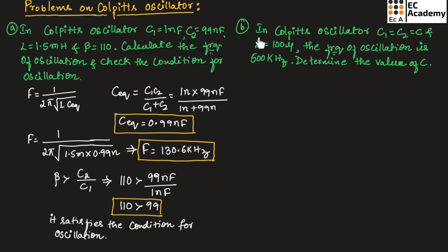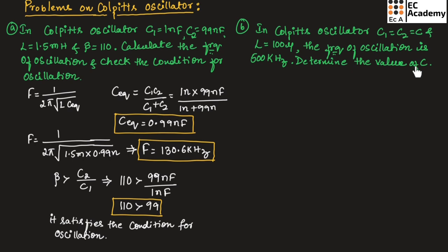Now let us consider the second problem. In Colpitt's oscillator, C1 = C2 = C and L = 100 microhenry. The frequency of oscillation is 500 kilohertz. We need to determine the value of C.